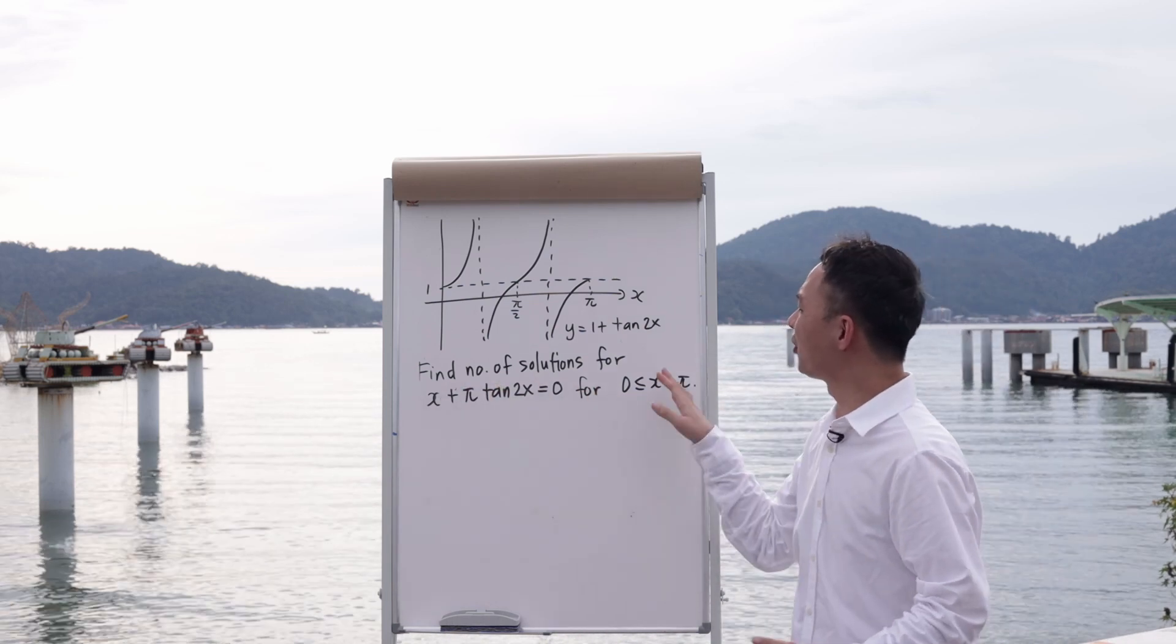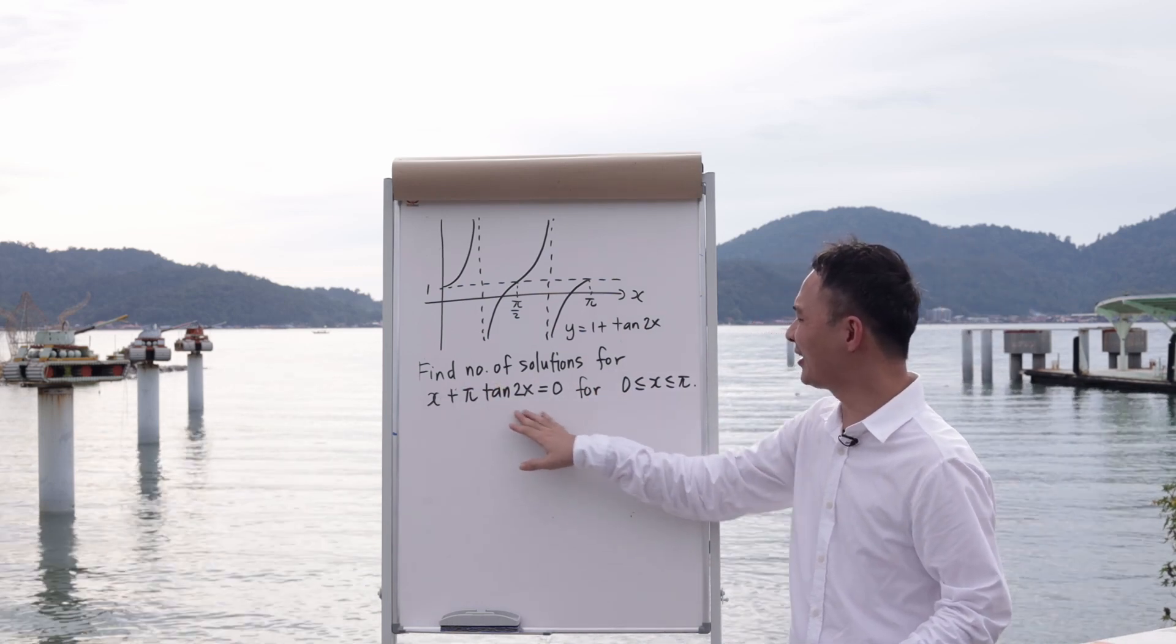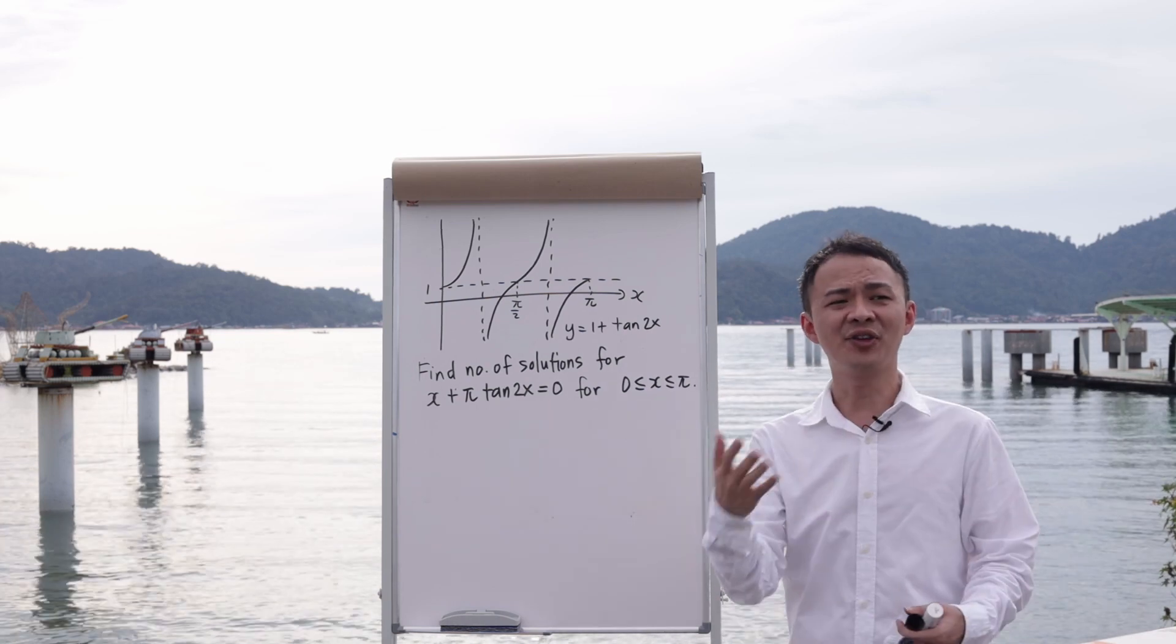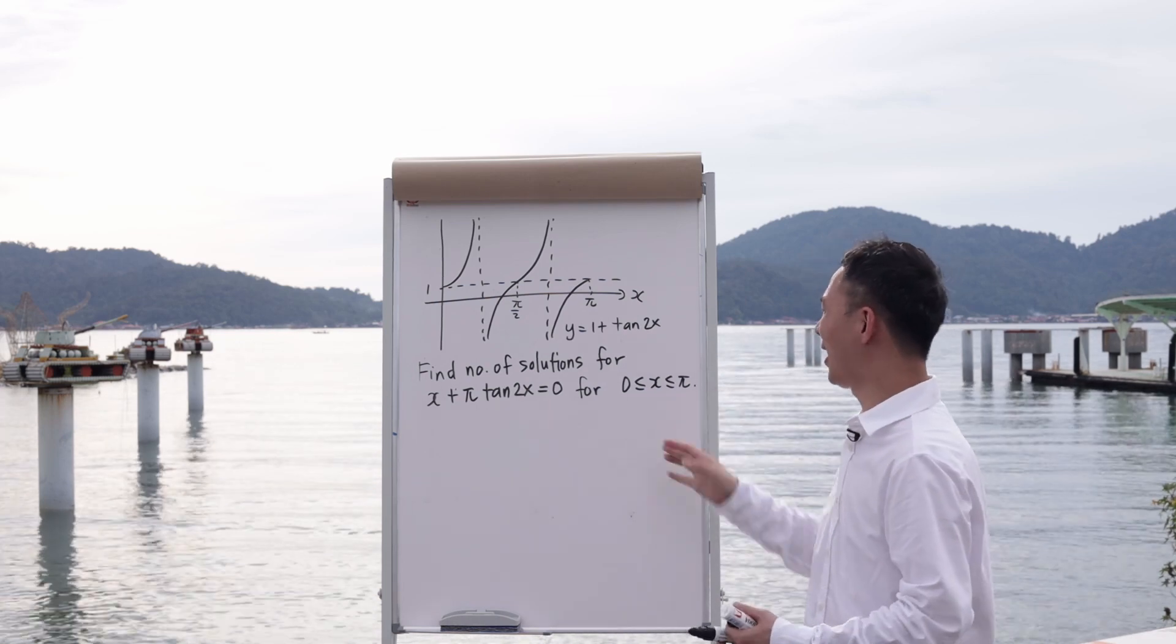So they ask you to find the number of solutions for x plus π tangent 2x equals to 0, and then they give you a range for x is between 0 and π.